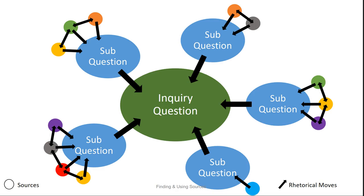A way of thinking about this is the dinner party approach: the green source speaks to a couple of sub-questions, but how would the green source speak to the yellow source? How would it speak to the orange source differently? And after you have those sources speaking to the sub-question — sometimes you might have lots of them like four sources, and in other cases just one — how are they speaking to the sub-questions, and how do those sub-questions in turn speak to the inquiry question so that it becomes a thesis statement, working toward the most effective paper possible?